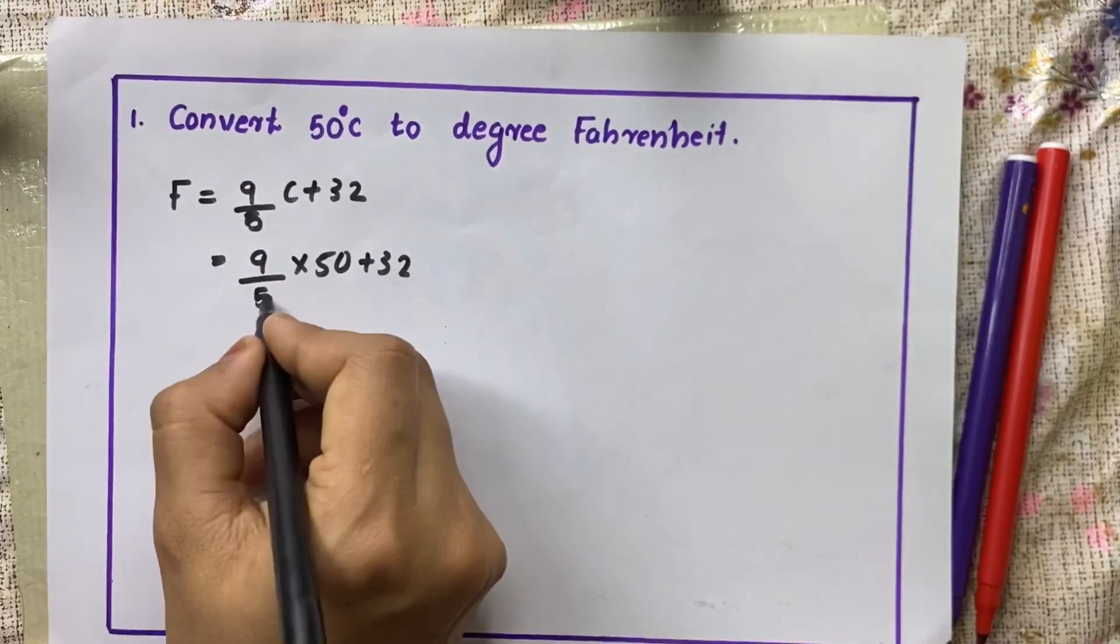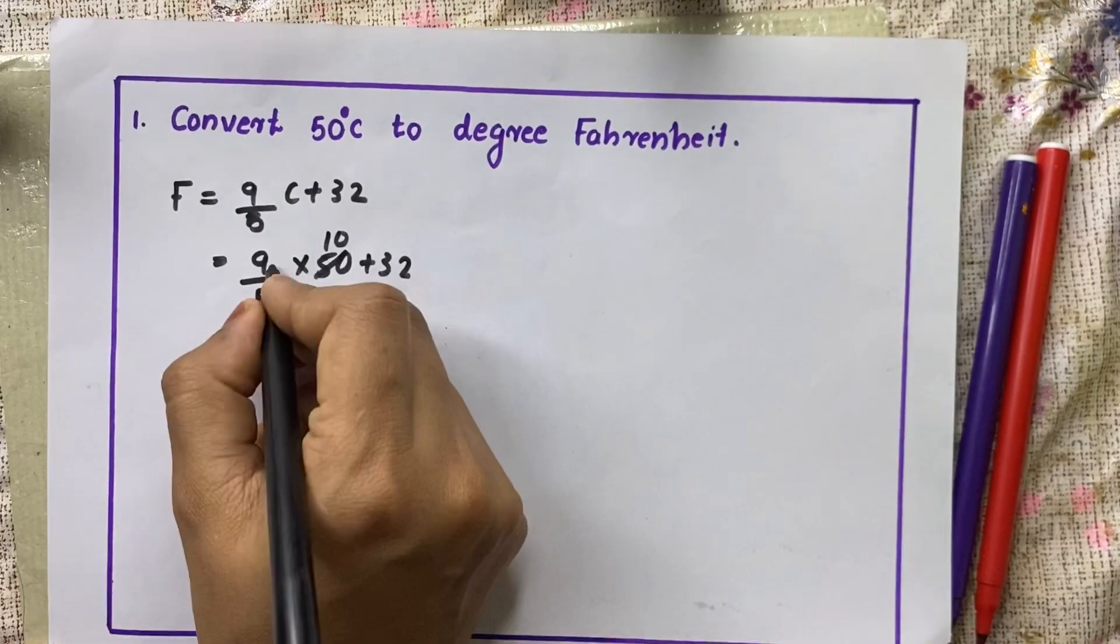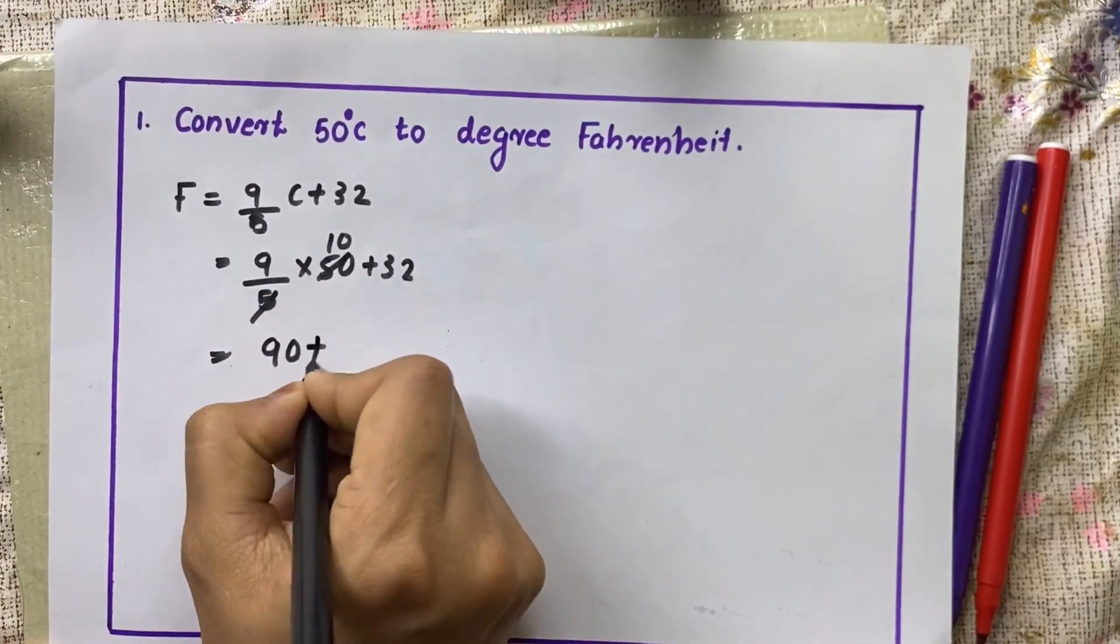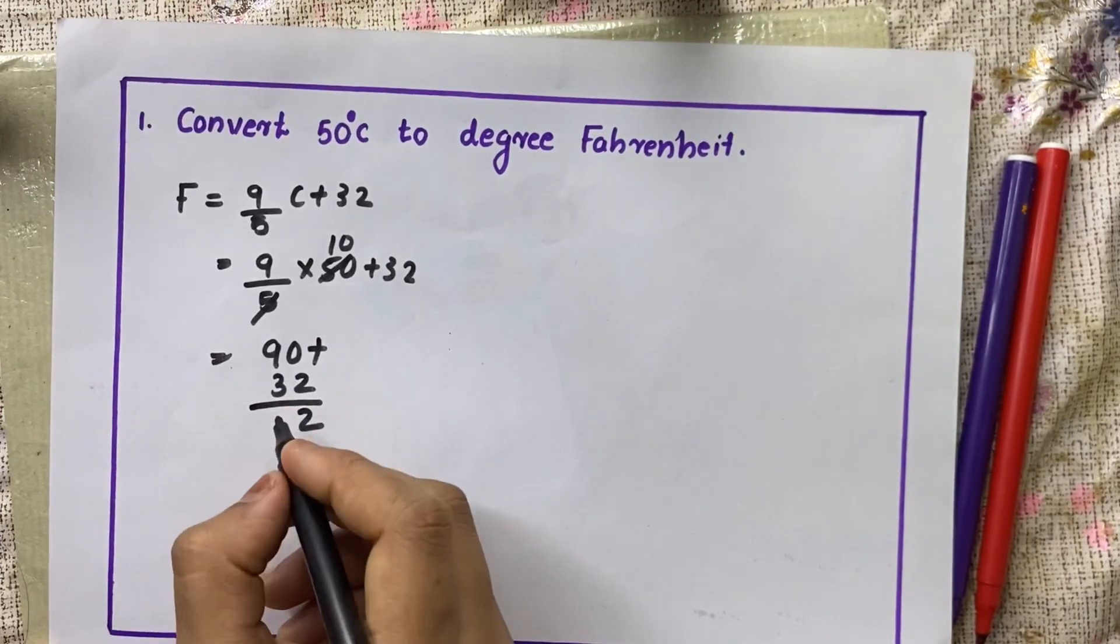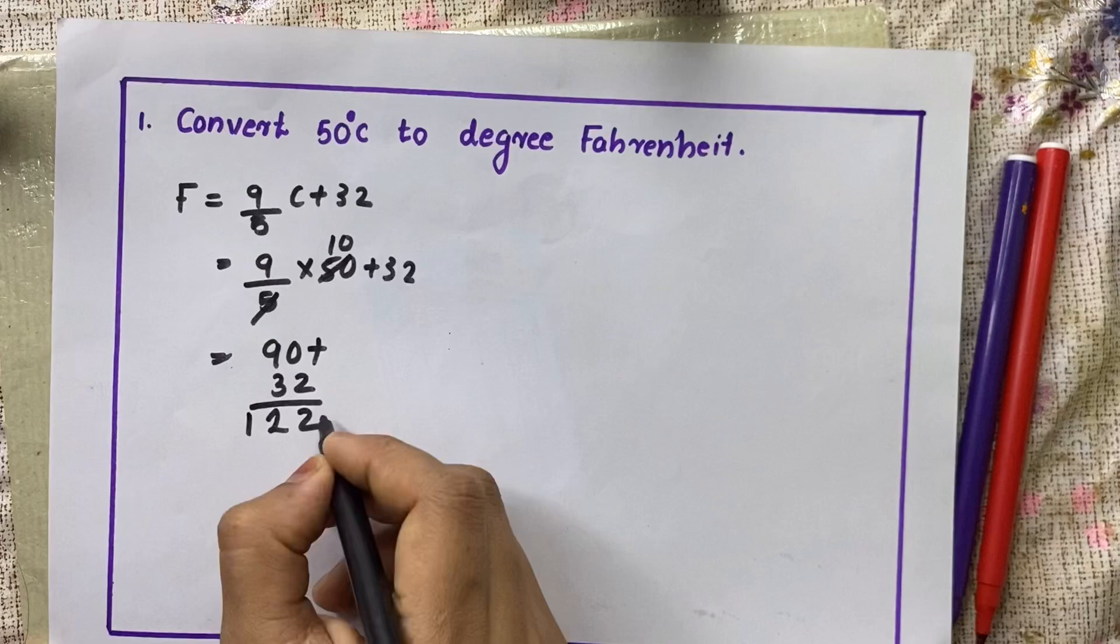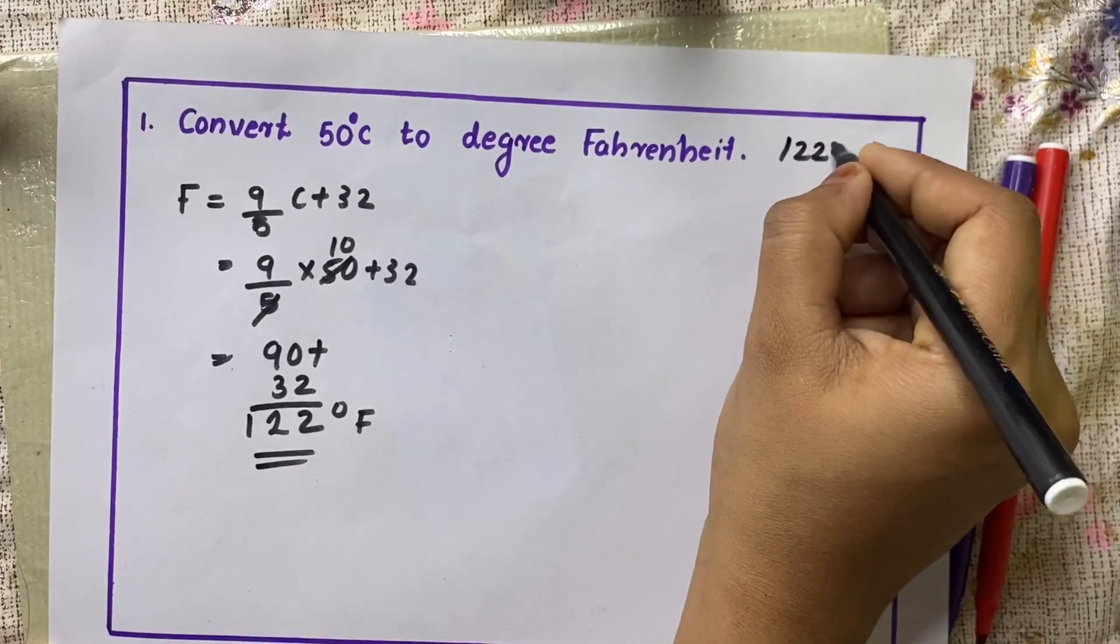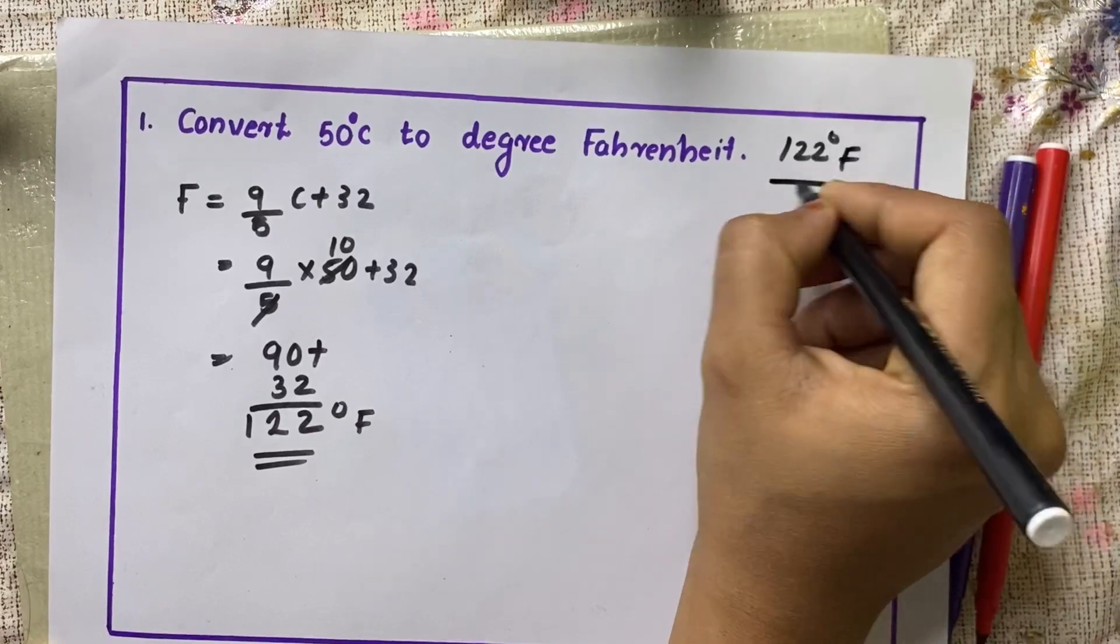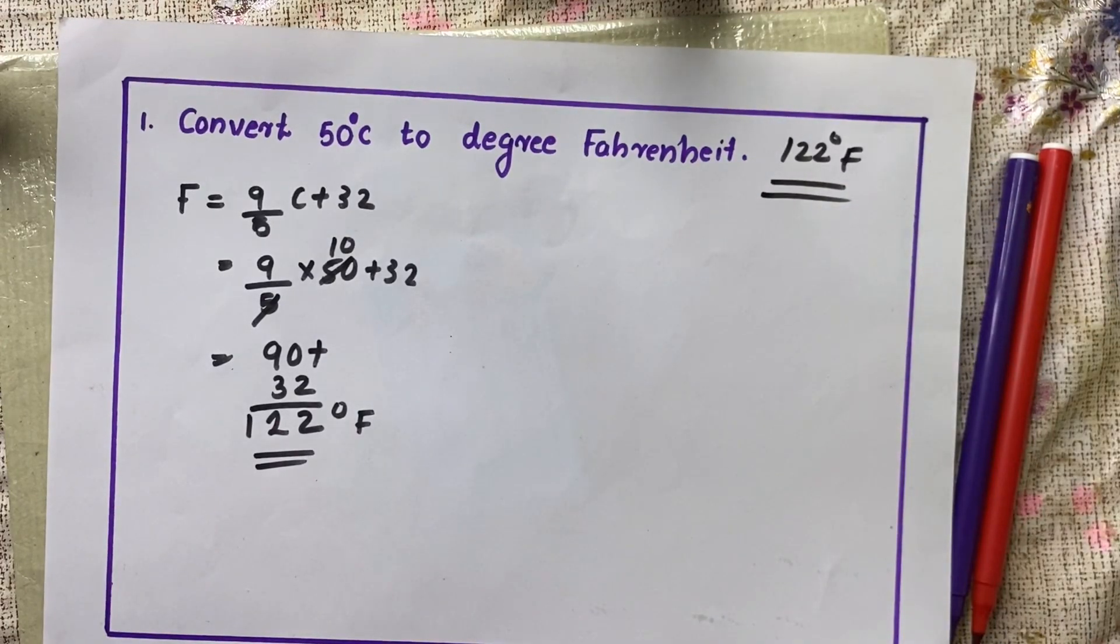So we will get 5 - tens are 50 - 9 into 10, 90 plus 32. 9 plus 3? 12. That much degree Fahrenheit. What is the answer? 122 degree Fahrenheit. Easy right? Please keep watch the next video also for the next problem.